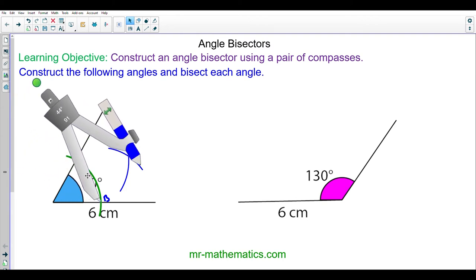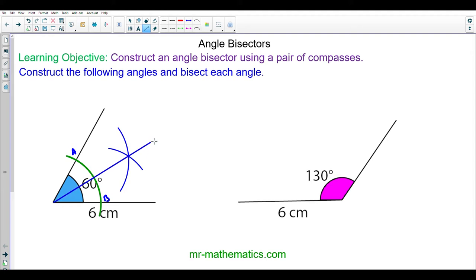You can see the two arcs intersect. Now I'm going to draw a line from the angle through the two intersecting arcs.